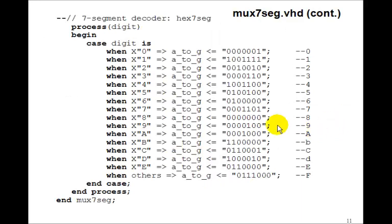And then we just need the 7 segment display. Well, the hex 7 seg would just make it a process within this top level design. This is exactly the same one we had in the previous lesson, where the process digit, when it's 0 to F, then we get the A to G's coming out. So that's it.